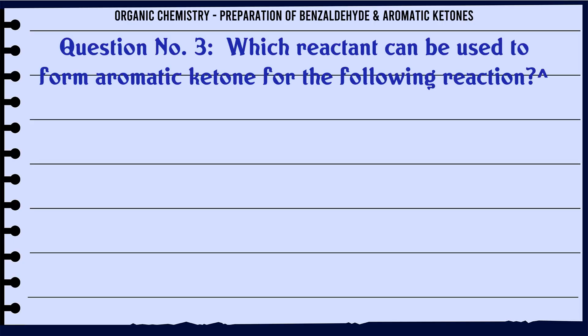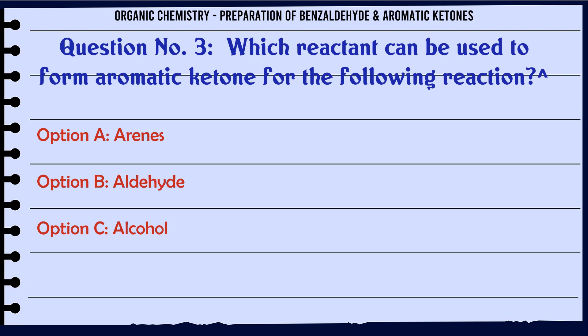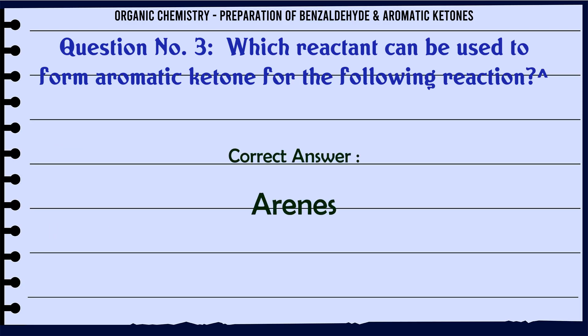Which reactant can be used to form an aromatic ketone for the following reaction? A. Arenes. B. Aldehyde. C. Alcohol. D. Terpenes. The correct answer is Arenes.